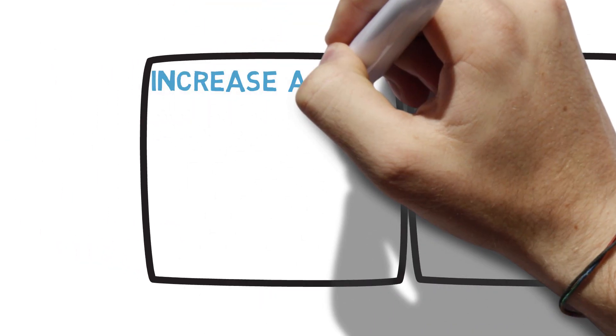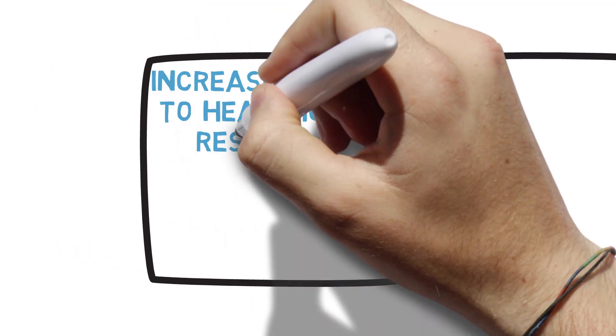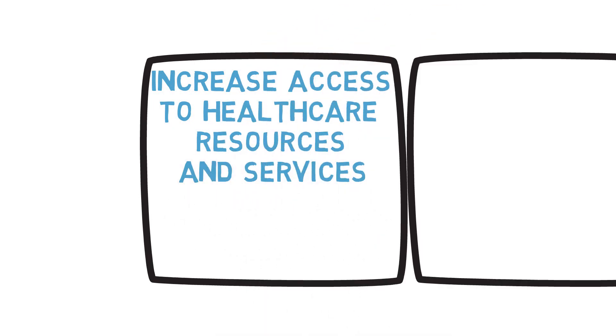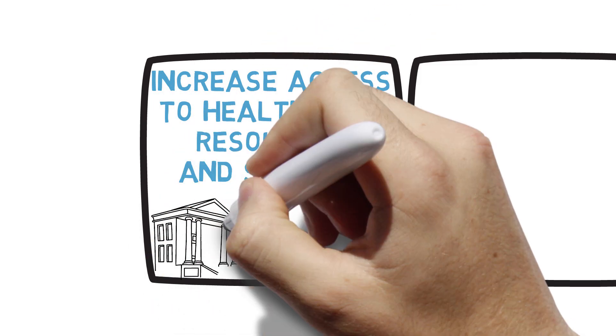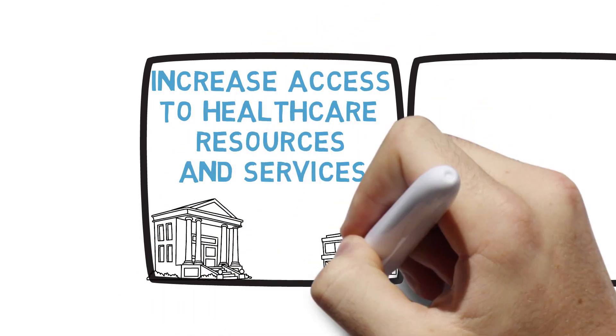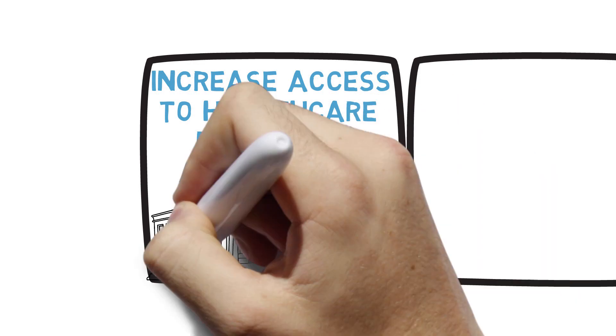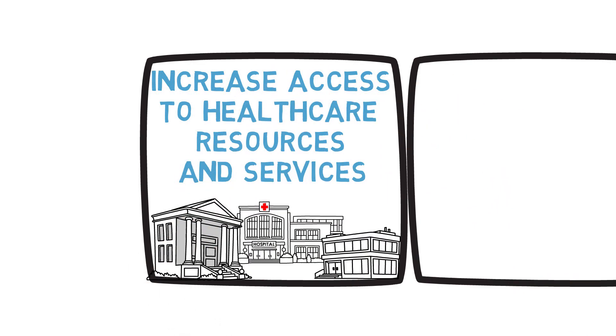Things that we can do to improve health equity include increasing access to healthcare resources and services. This can include initiatives such as expanding healthcare coverage or increasing the availability of healthcare facilities in underserved areas.